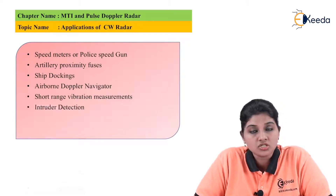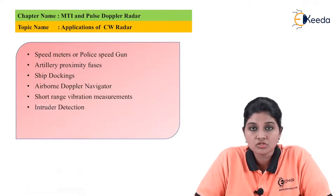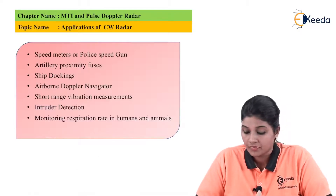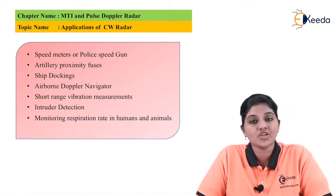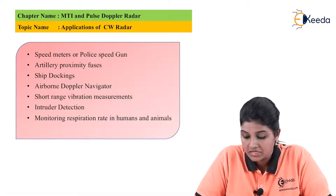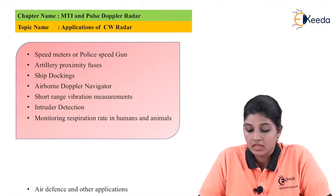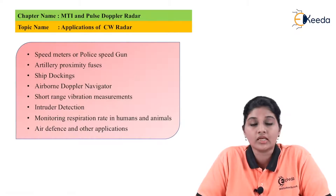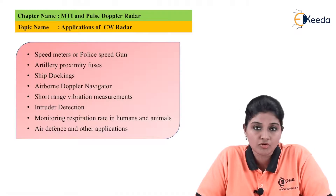The next application is intruder detection — we can use the continuous wave radar on highways for detection of intruders. The next application of the continuous wave radar system is monitoring respiration rate in humans and animals. And last but not the least, it is used in air defense and other applications like air and oil exploration systems.